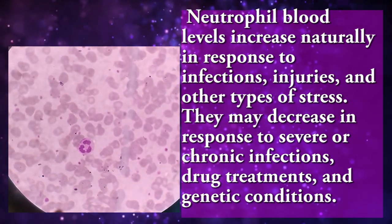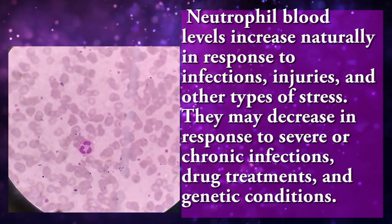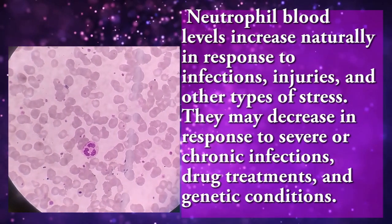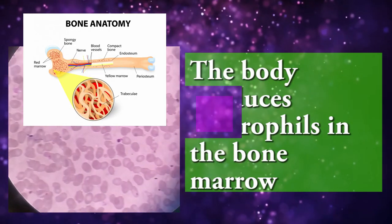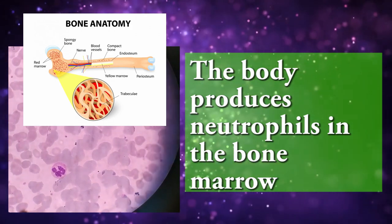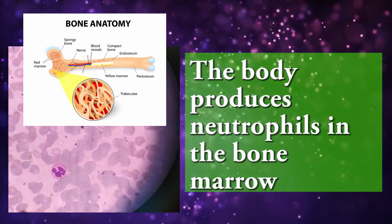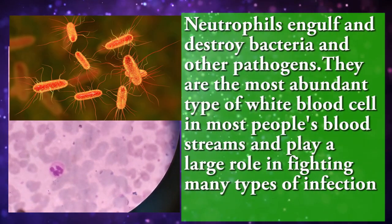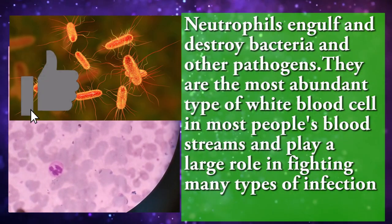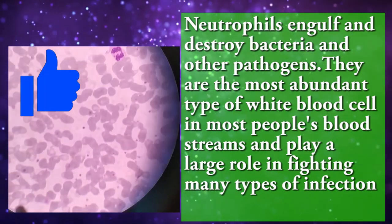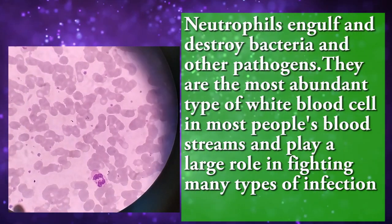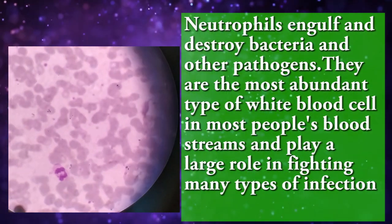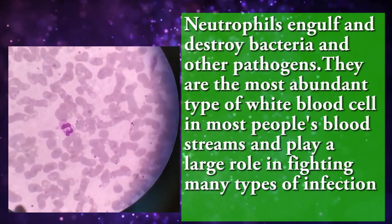Neutrophil levels may decrease in response to severe chronic infections, drug treatment, and genetic conditions. The body produces neutrophils in the bone marrow. Neutrophils engulf and destroy bacteria and other pathogens. They are the most abundant type of white blood cell in most people's bloodstreams and play a large role in fighting many types of infections.